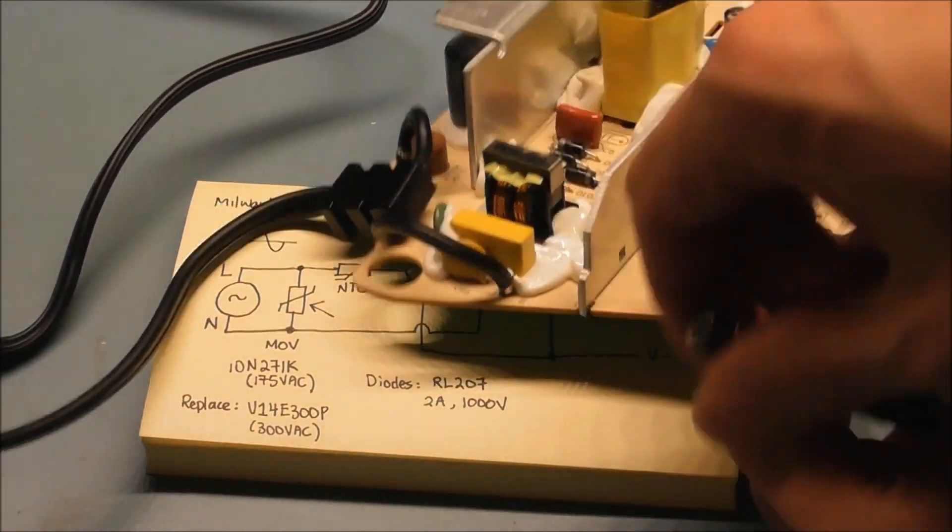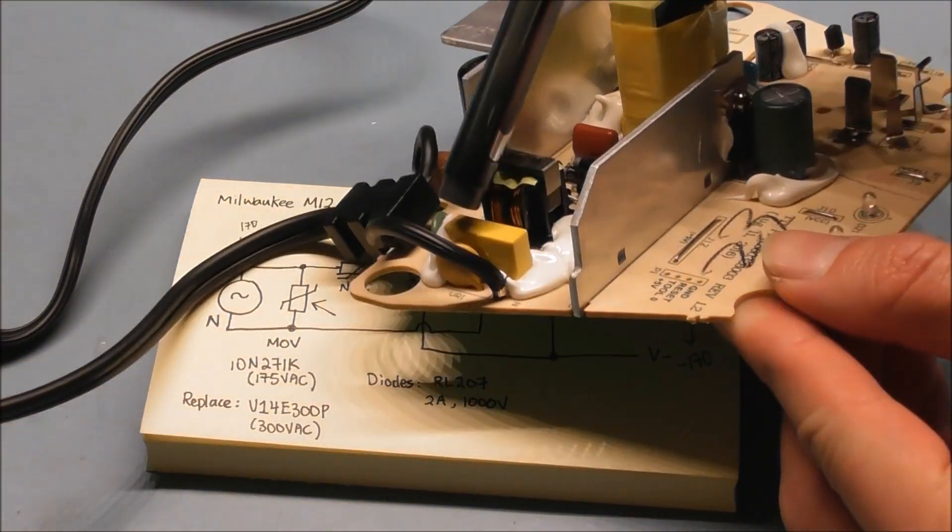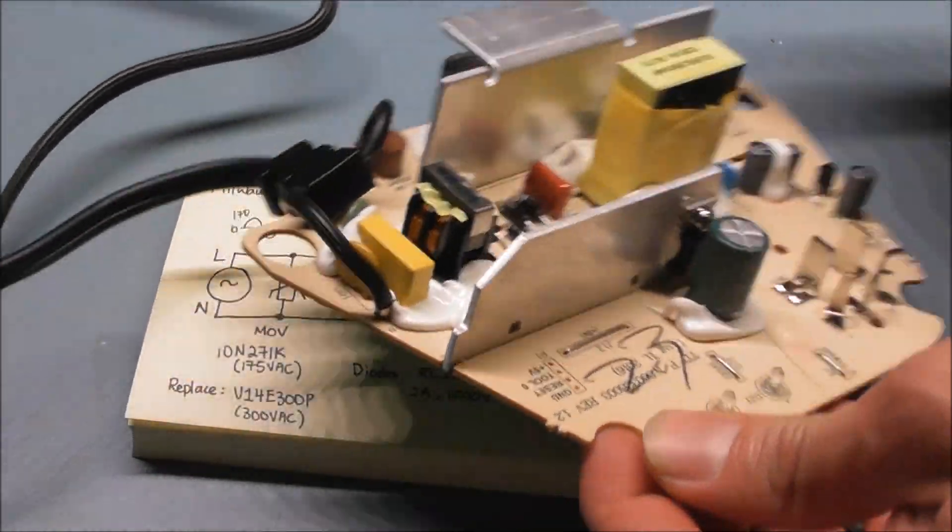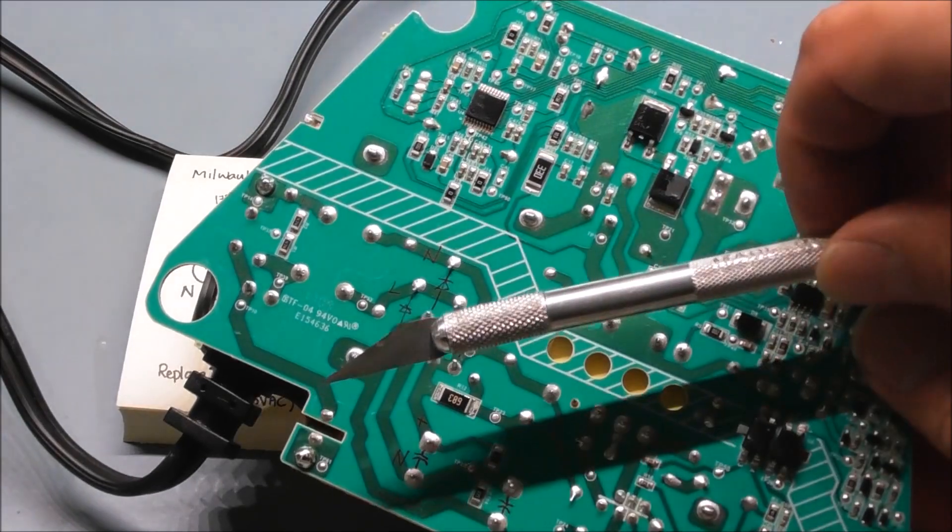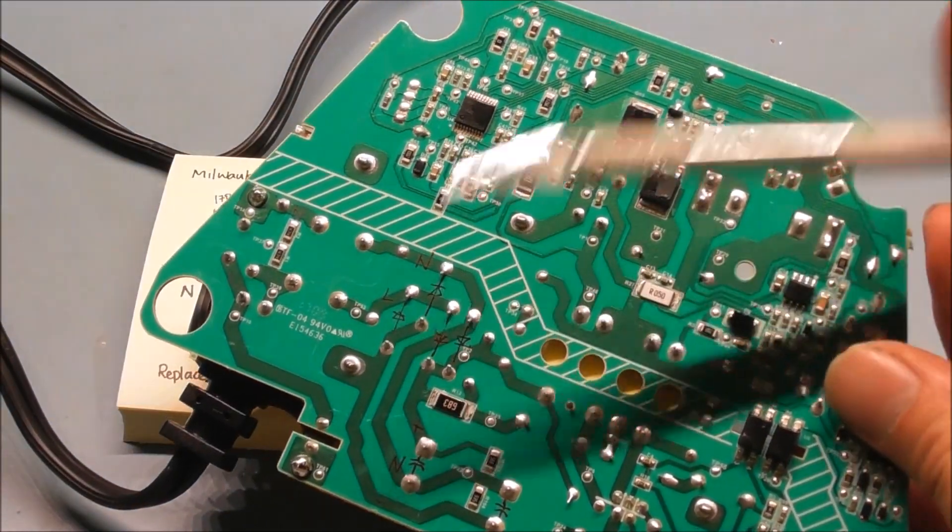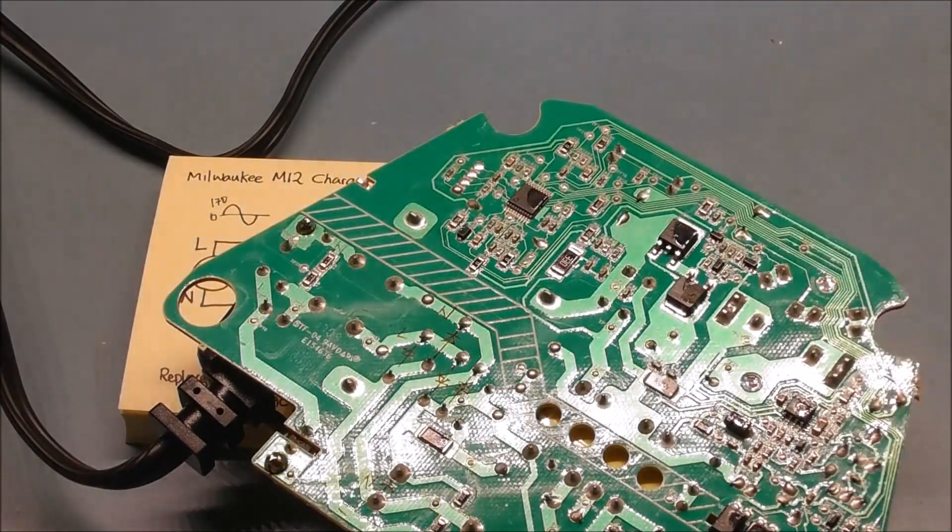So the first thing I'll do is replace this yellow MOV with the red one, and the second thing I'm going to do is cut the trace, and I'm going to do that with a pen knife. So I'm going to do this off-camera just so it's a little bit more convenient, and I will show you the results.